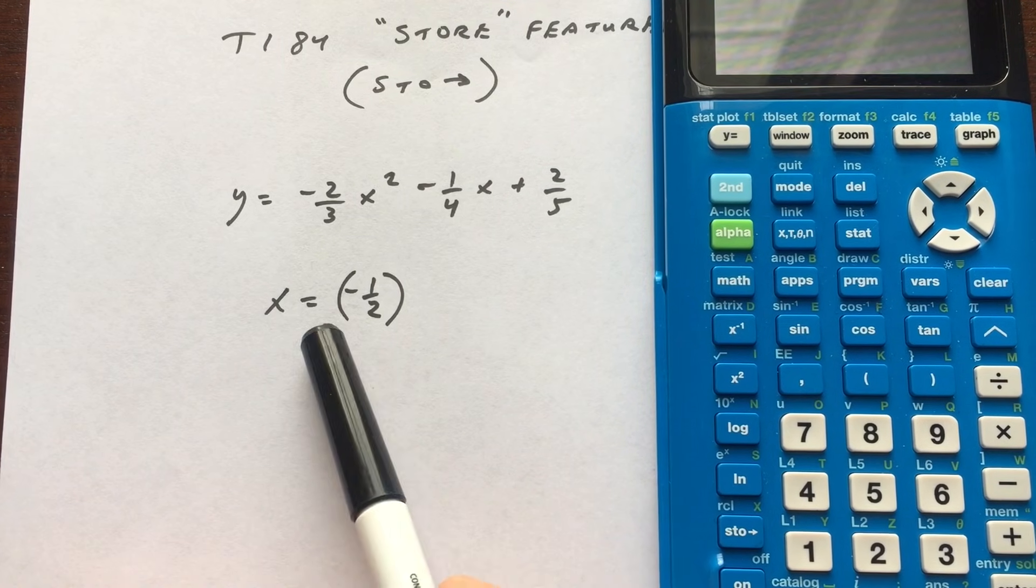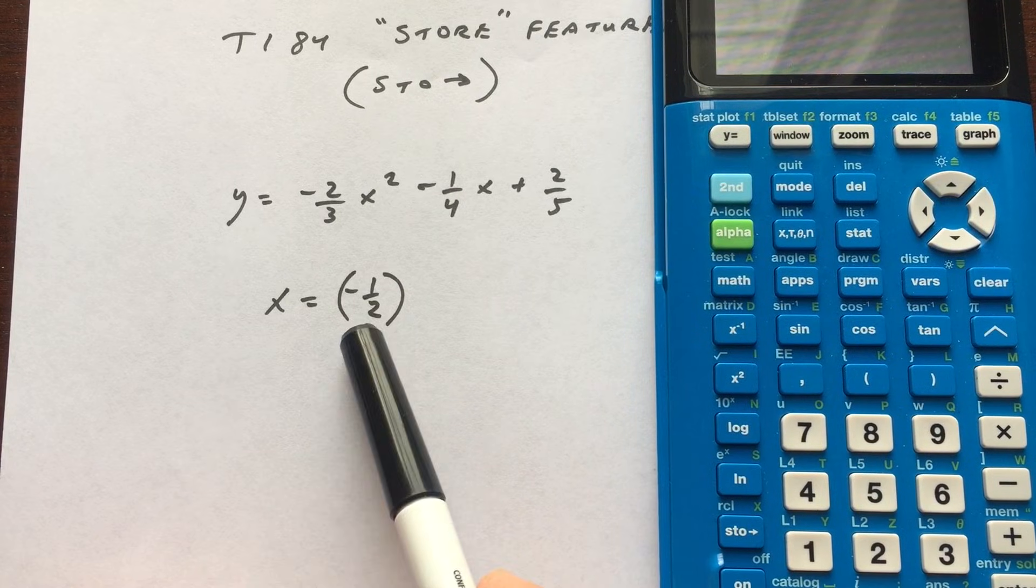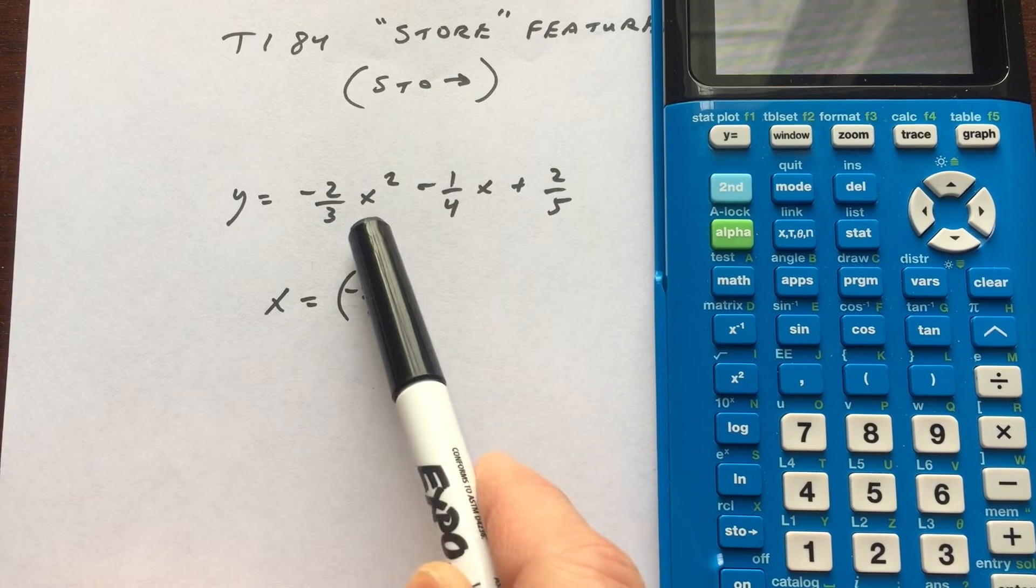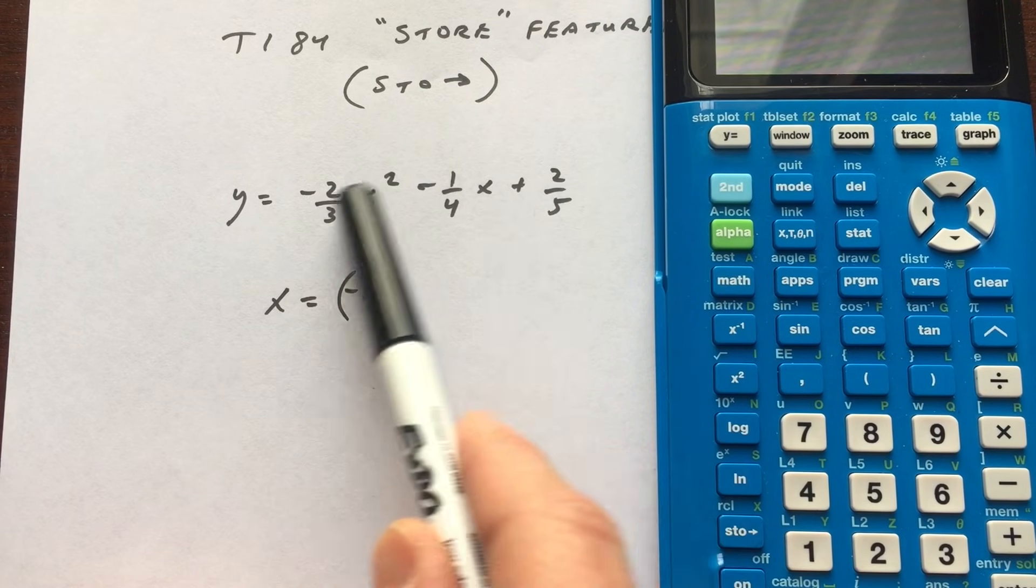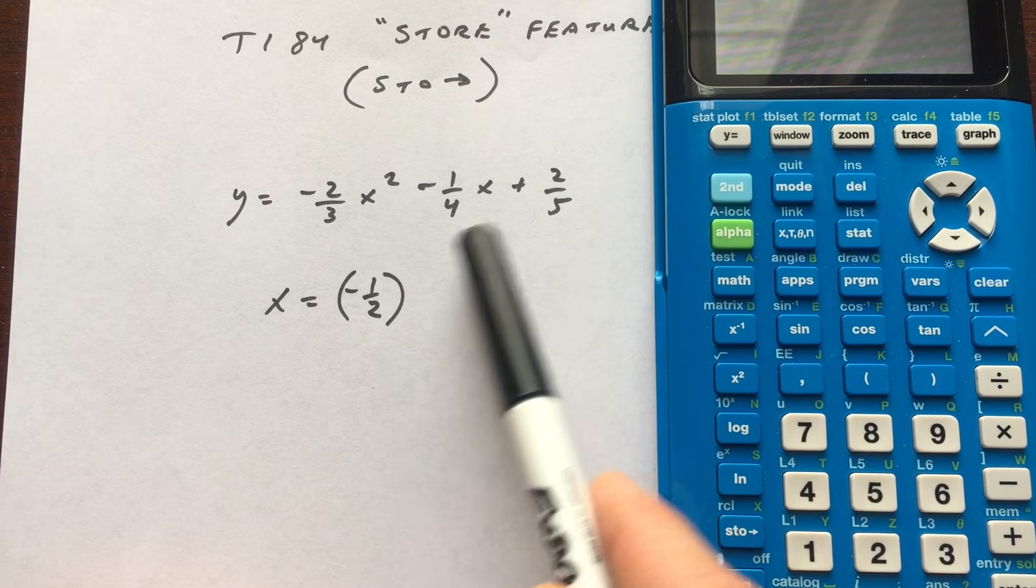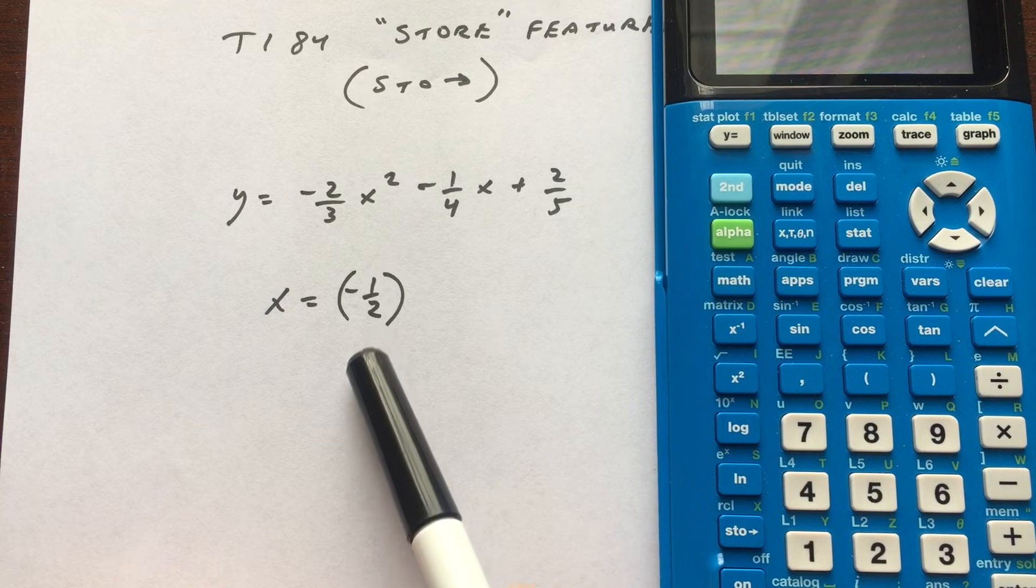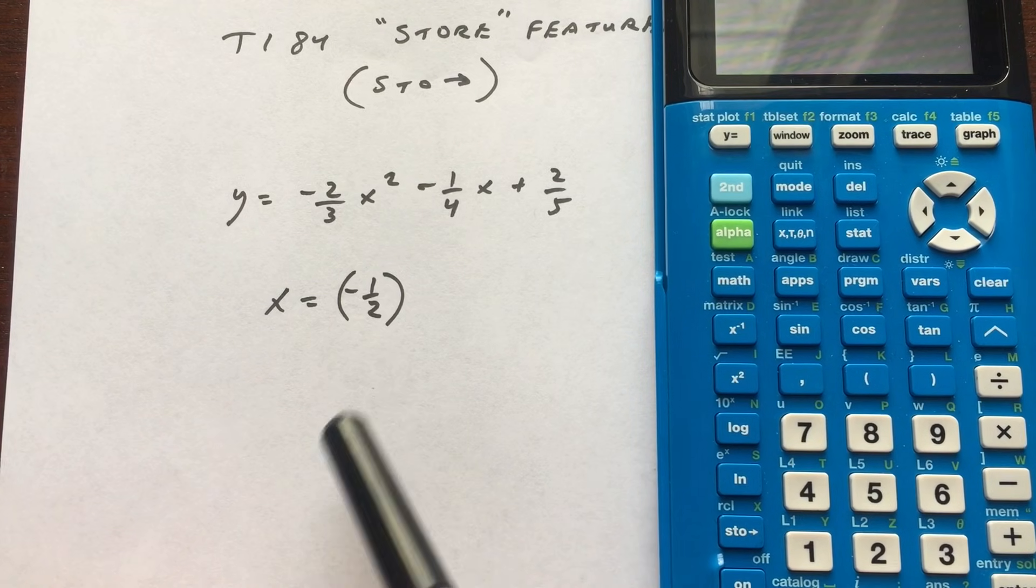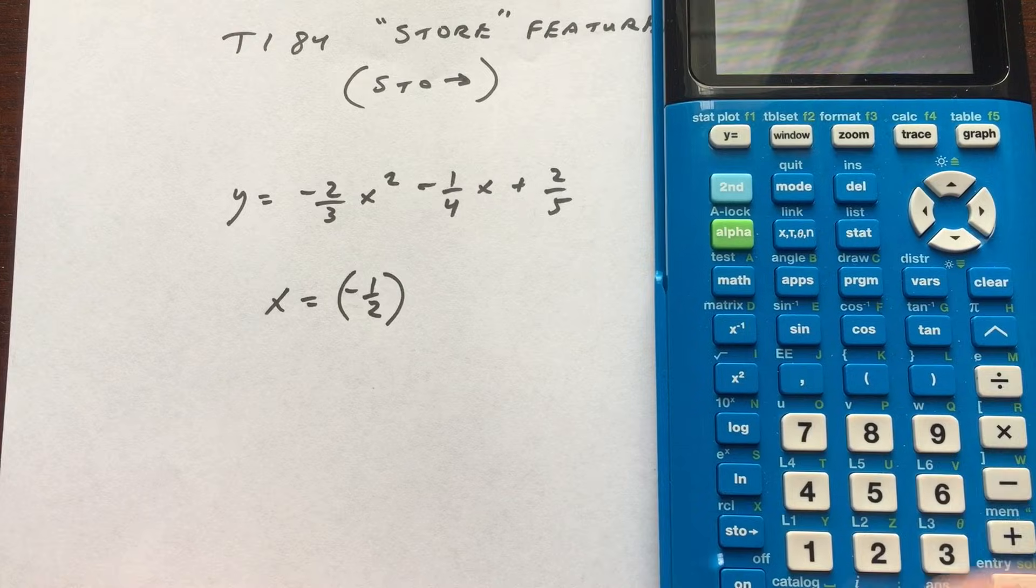What you can do, say for example in this problem, we want to find out what the Y value is when X equals negative one-half. We want to put negative one-half in here, and you can see there's squaring, there's a lot of negative numbers, there's fractions, and especially like on a standardized test when you might be pressed for time or you just want to check your work, this store feature can be really helpful.